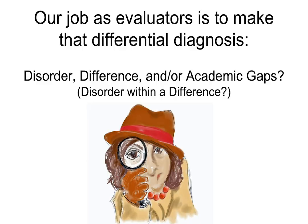These kids are referred to us because they're having some trouble, and our job is to identify whether it's a true disorder, whether it's some kind of difference — cultural, linguistic, sociolinguistic — or whether there are academic gaps that can be filled. One of the great researchers in African-American English, Dr. Jana Oding in Louisiana, talks about identifying a disorder within a difference — meaning identifying a disorder within speakers of varieties of English other than General American English.